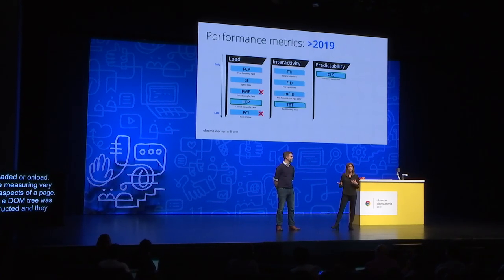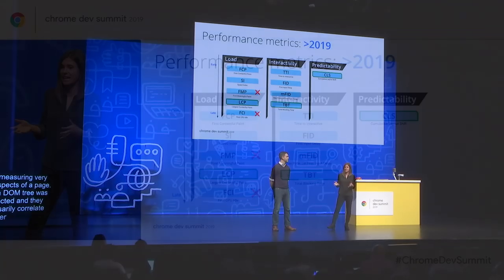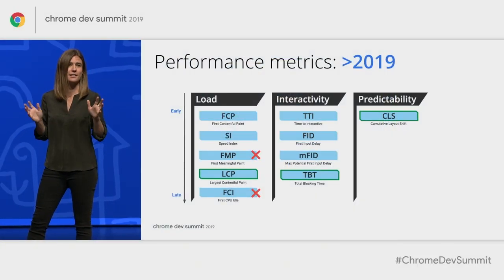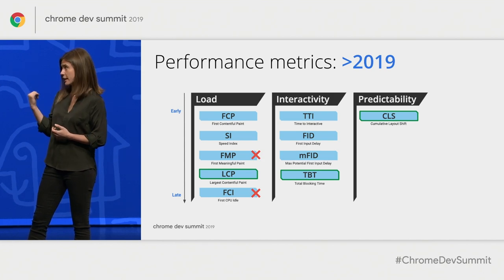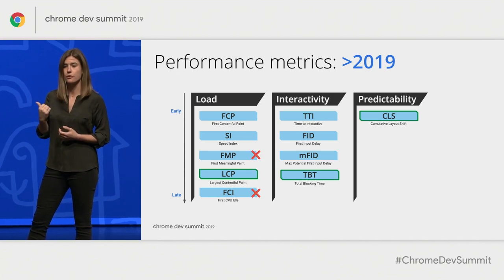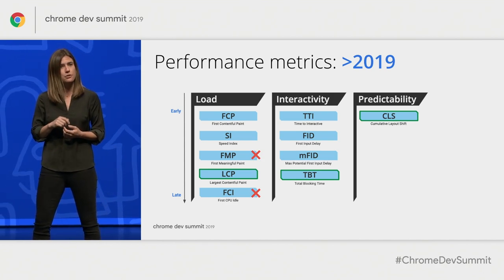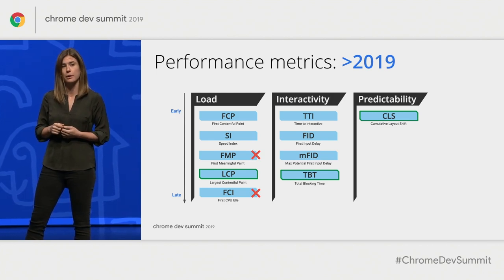As we evolve our metric story, we want to fill in as many gaps of our measurement of user experience as we can. There are a few major shifts here that I'd like to call out. The first one is the reduced emphasis on first meaningful paint and first CPU idle.